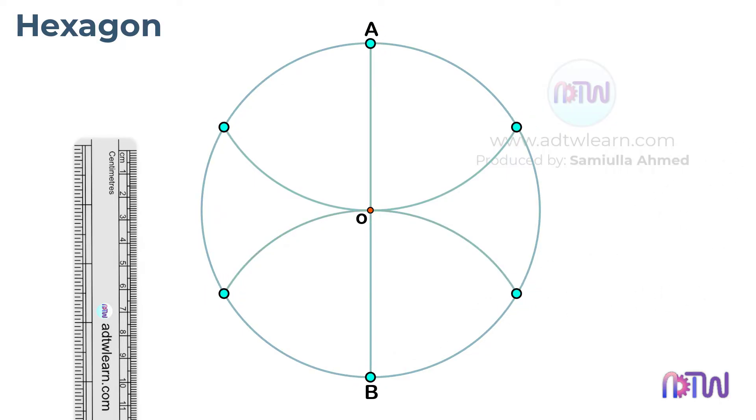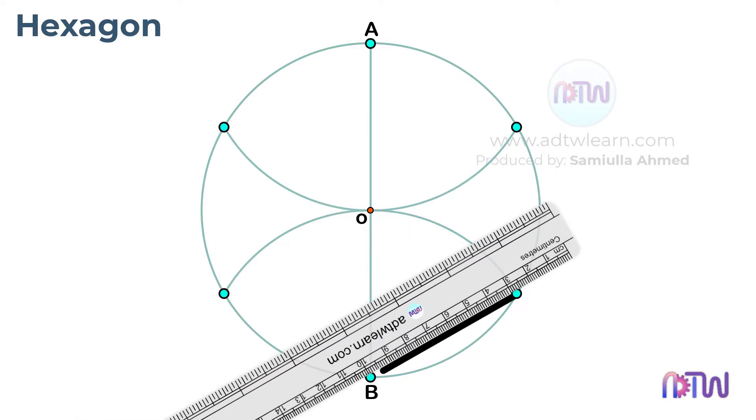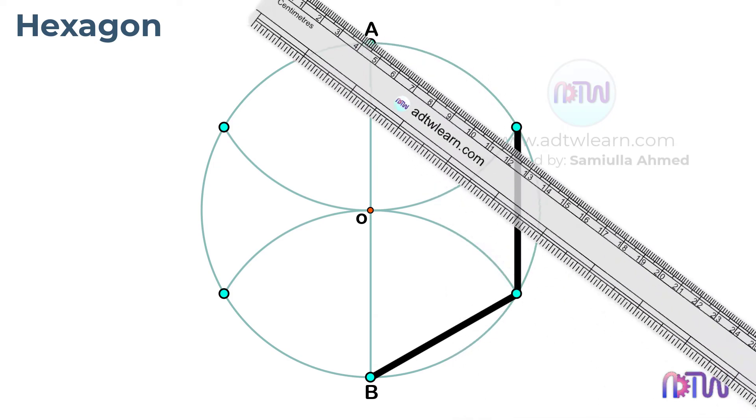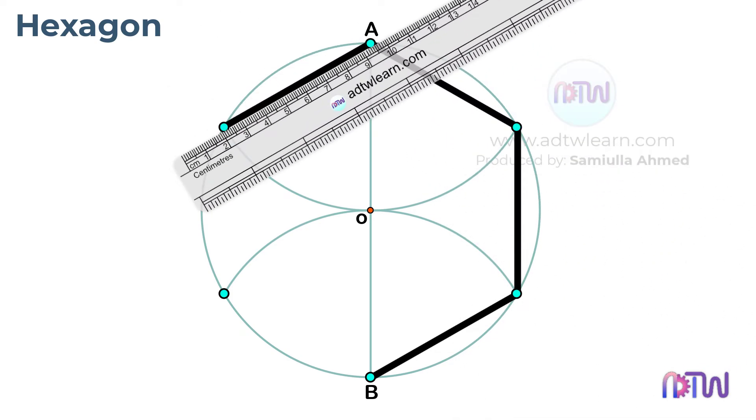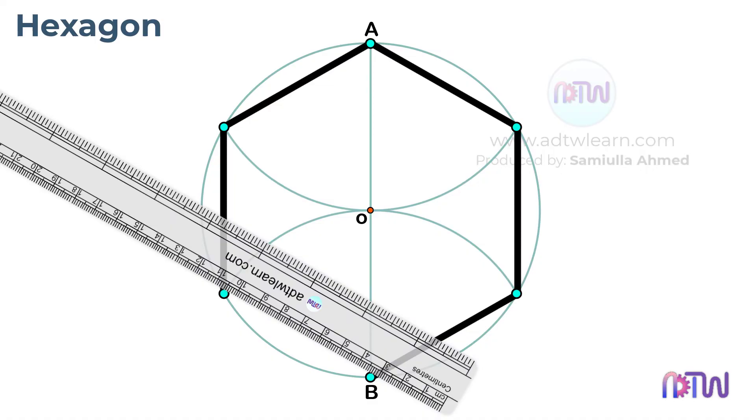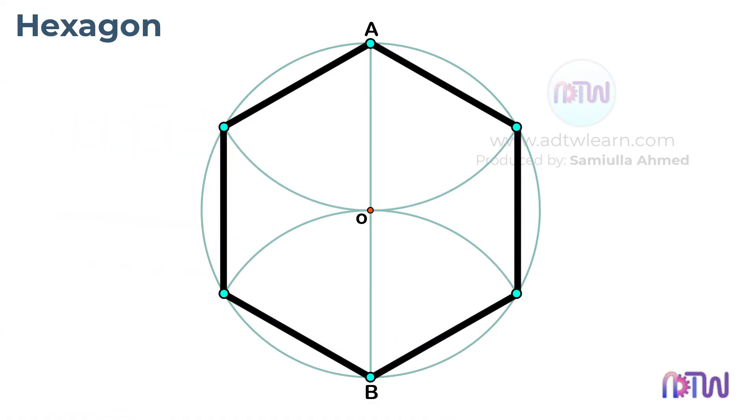These are the required corner points of the hexagon which will fit exactly inside this circle. Draw lines joining these points. This is our final hexagon.